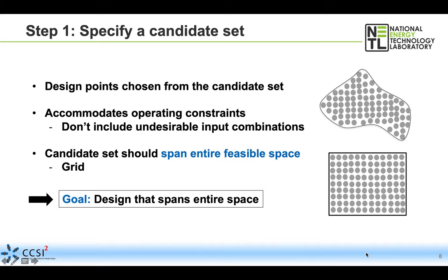We want to make sure that these candidate set points are all feasible—that they account for any operating constraints in the process. We don't want to include any undesirable input combinations because any one of these may end up in the design we ultimately use. We really want the candidate set to span the entire feasible space. Oftentimes that looks like a grid with points as close together as is reasonable, to ensure a thorough covering of the space of interest.